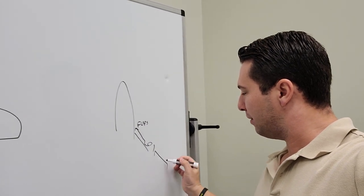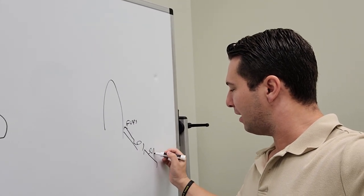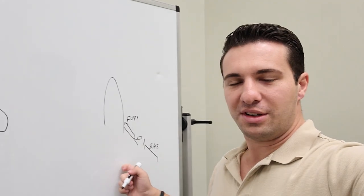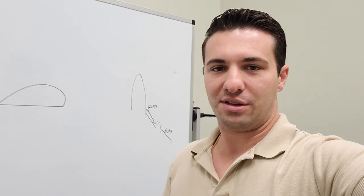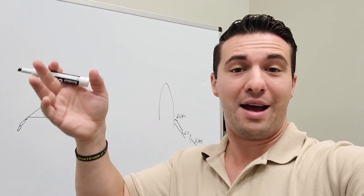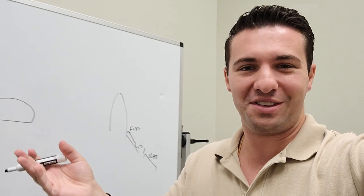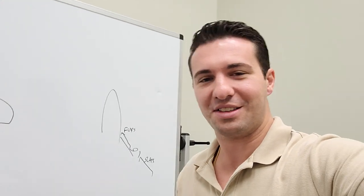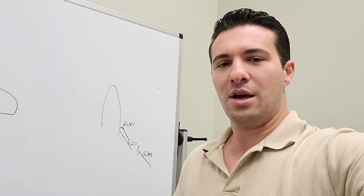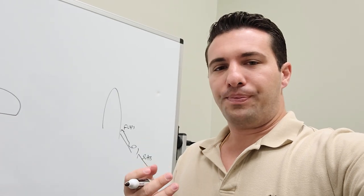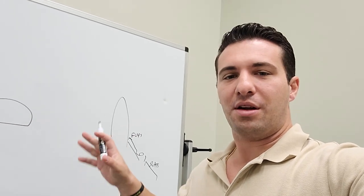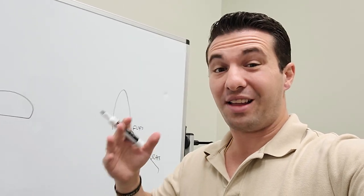Outboard of the engine, we have leading edge slats. Now, this is on the 737 NG and also the 737 Classic. Really the 200, the MAX — all the 737s are basically the same. They do have leading edge flaps and slats. Now, some airplanes have leading edge flaps; others only have slats.